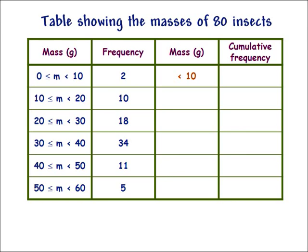The first class goes from 0 to 10, so the upper bound is 10, and we write less than 10. The second class goes from 0 to 20, so the upper bound is 20, and we write less than 20. Why we write this will become apparent when we complete the cumulative frequency column. The third class goes from 0 to 30, so we write less than 30. The remaining rows are completed in the same way.